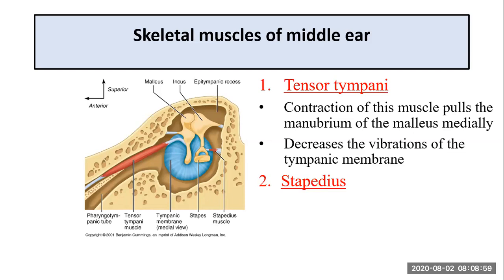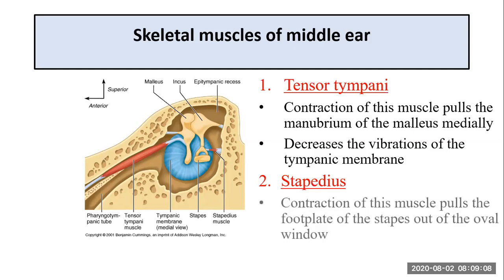As the name suggests, it tenses the tympanic membrane. The second muscle involved in the reflex is the stapedius, and the contraction of the stapedius muscle pulls the footplate of the stapes out of the oval window.